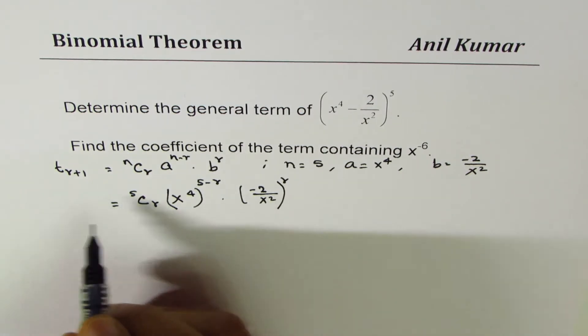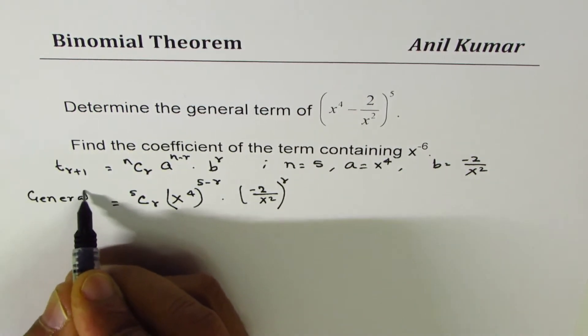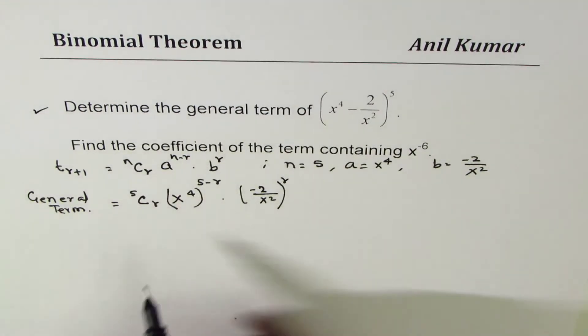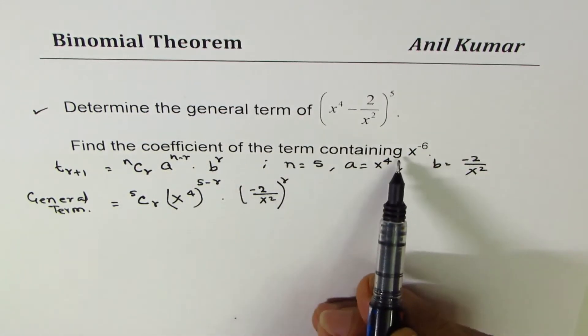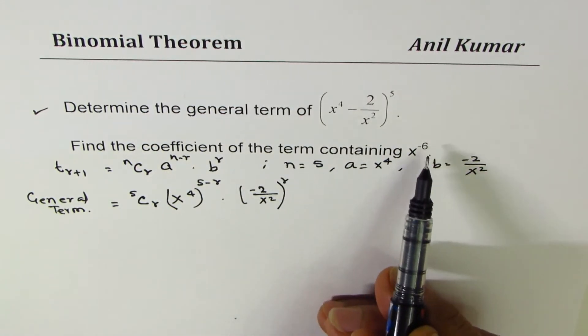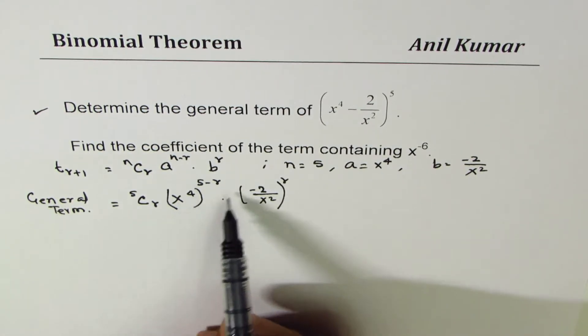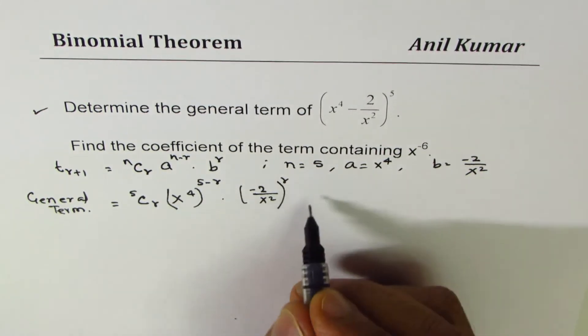So that is the general term. We can write this as general term. That's part 1. The second is: find the coefficient of the term containing x^(-6). We can actually simplify this term.